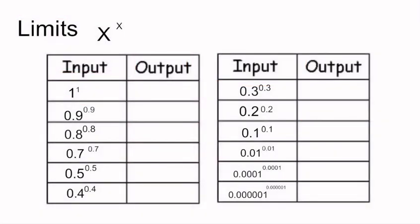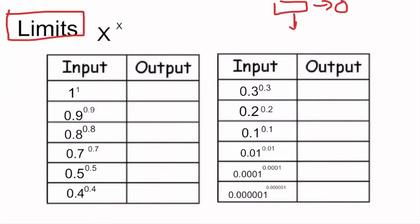We've reached a bit of a dilemma, and the method we're going to use to work out this sum is the mathematical concept of limits. Basically, we're going to have a sum that's getting closer and closer to 0, and the answer to our sum is going to be getting closer and closer to a certain figure — that'll be the answer to 0 to the power of 0.